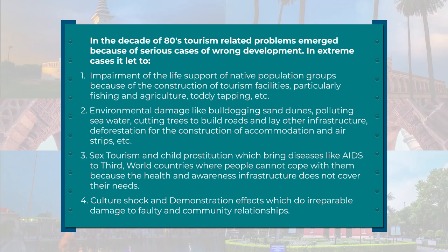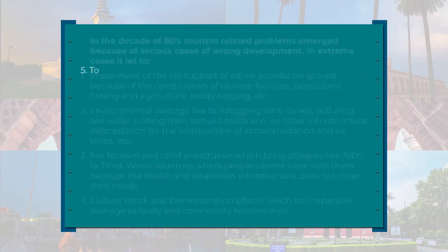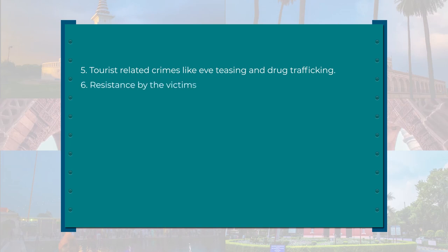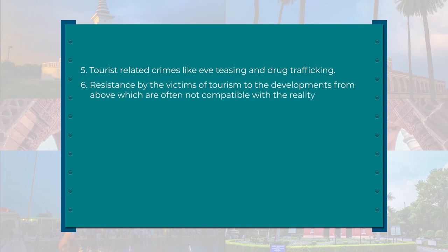Number three: sex tourism and child prostitution, which bring diseases like AIDS to third-world countries where the health and awareness infrastructure cannot cope. It leads to cultural shock and demonstration effects which do irreparable damage to family and community relationships. The local population starts imitating what the tourists are doing — adopting tourist cultures while leaving their own — which in the long run may threaten the cultural fabric of the host destination. Number five: tourist-related crimes like eve-teasing, drug trafficking, and prostitution also increase with the onset of tourists, as demand creates a supply mechanism automatically.